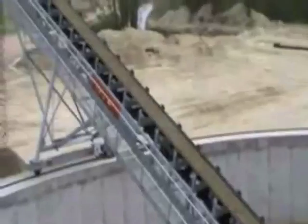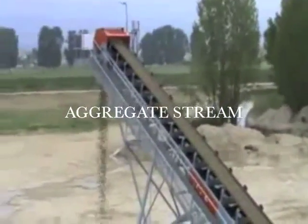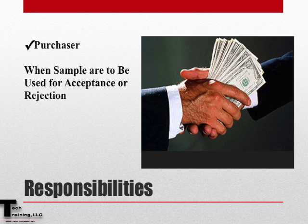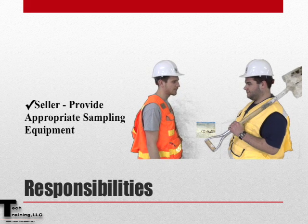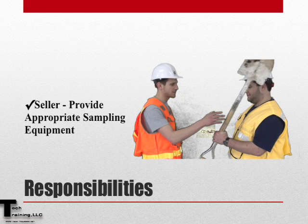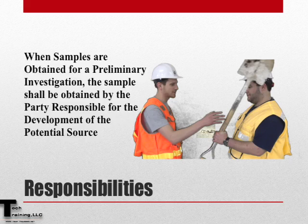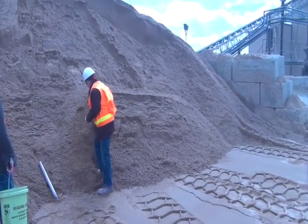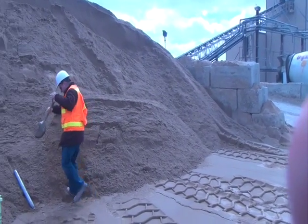The responsibility for obtaining the sample will depend upon the reason for which the sample is being obtained. The manufacturer and contractor are responsible when the sample is being obtained for control of production at the source or control of work at the site. But it is the purchaser who is responsible when samples are being obtained for acceptance or rejection as a potential source. The seller is always responsible for providing the appropriate sampling equipment. Whenever the sample is being obtained as part of a preliminary investigation, the sample shall be obtained by the party responsible for the development of that potential source.